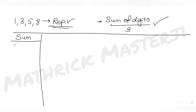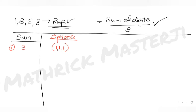First case: sum = 3. The only option is selecting all three ones — {1, 1, 1} — because selecting any other digit would make the sum greater than 3. So there is just one combination here.